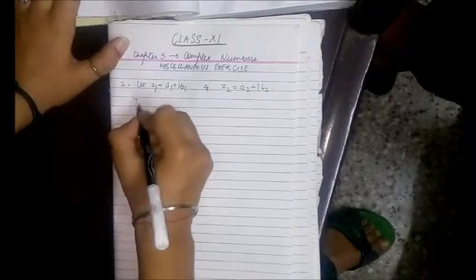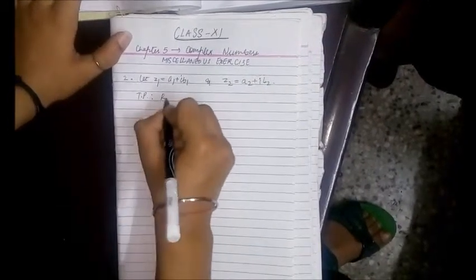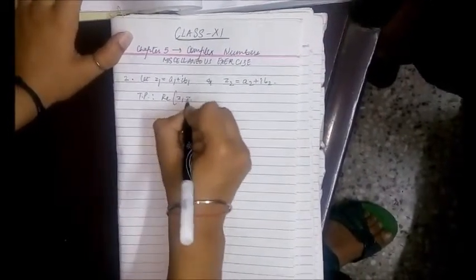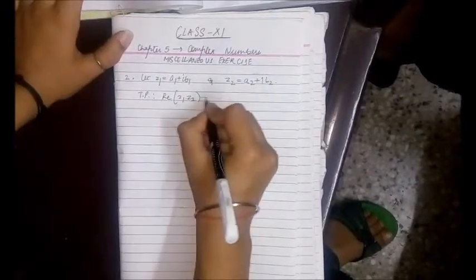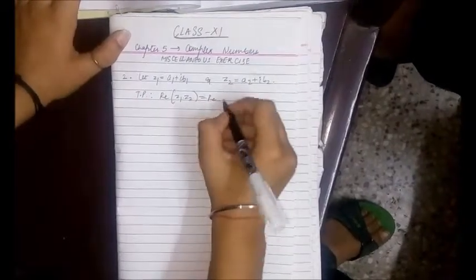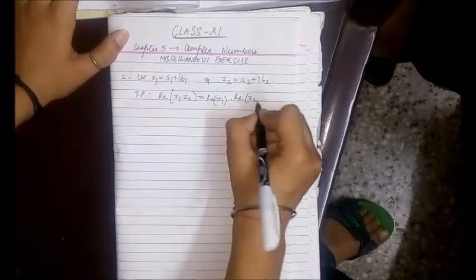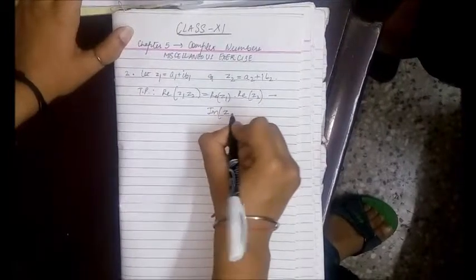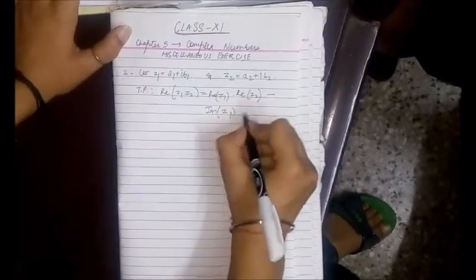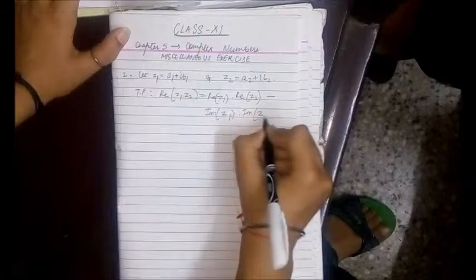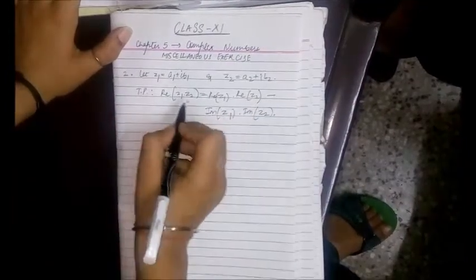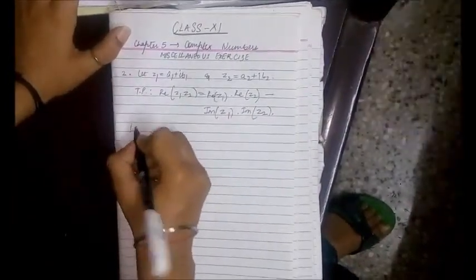Now we need to prove that the real part of Z1 into Z2 is equal to the real part of Z1 into the real part of Z2 minus the imaginary part of Z1 into the imaginary part of Z2. So first, let's take the LHS.